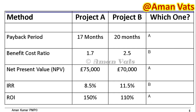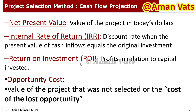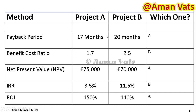Now comparing Project A and Project B using these methods: payback period — A is 17 months, B is 20 months, so A is selected because the payback period is lesser. Benefit cost ratio — A is 1.7, B is 2.5, so B is selected because a higher ratio is better. Net present value — A is $75,000, B is $70,000, so A is selected. Internal rate of return — A is 8.5%, B is 11.5%, so B is selected.